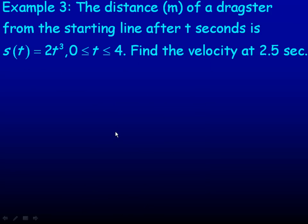Example number three, the distance in meters of a dragster from the starting line after t seconds is given by this function. S represents the distance after t seconds is 2t³. This is just a restriction. Apparently, this function only works for up to four seconds, zero to four seconds. And we're asked to find the velocity at two and a half seconds. So if this is displacement, or distance, the rate that distance changes is velocity.